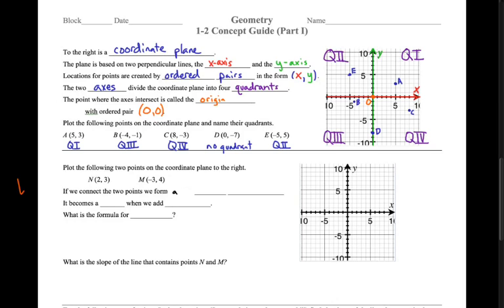Next and really the last part of this is we'll talk about, well, let's just continue. Plot these two points. N is at point two, three. M is at the coordinate negative three, four. If we connect the two points, we form a line segment. We'll talk a lot more about this in the days to come, but this is a line segment. It is not a line. It's part of a line. It ends. And we would name it like this. It ends. It doesn't go on forever. It doesn't have the arrows. So it becomes a line when we add the arrows to the ends of it like that.